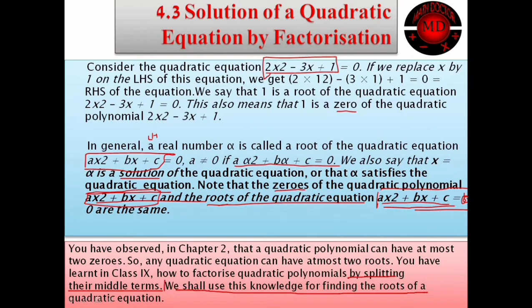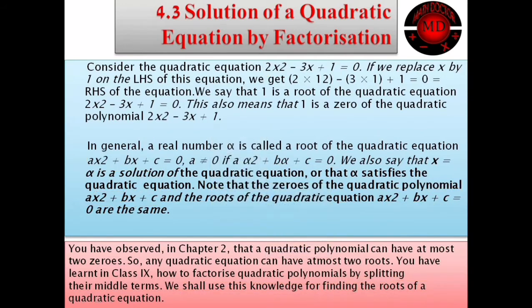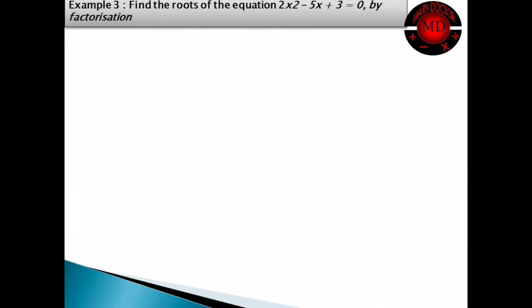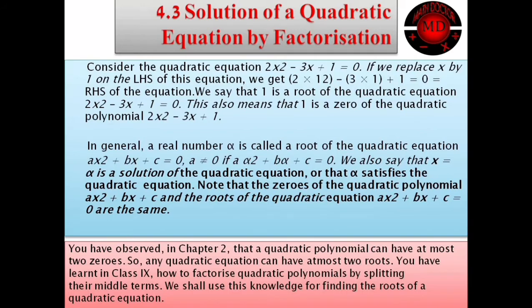You have observed in chapter 2 that a quadratic polynomial can have at most two zeros. So any quadratic equation can have at most two zeros. You have learnt how to factorize a quadratic polynomial by splitting the middle term. We shall use this knowledge for finding the roots of a quadratic equation. This is very important.